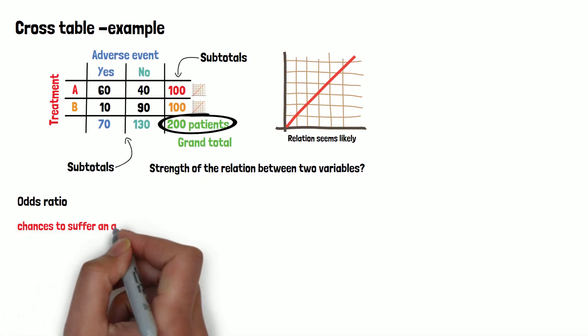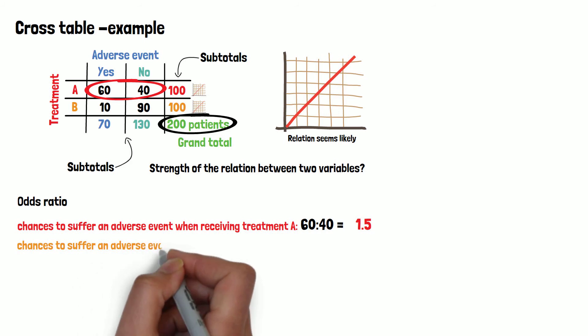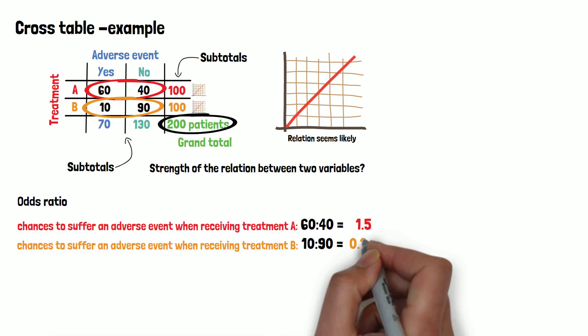The odds here are telling us how the chances are to suffer an adverse event when receiving treatment A. In this case, the chance is 60 to 40. 60 patients with an adverse event to 40 patients that didn't suffer one equals 1.5. We divide the number of patients suffering an adverse event by those not suffering an adverse event within the group of the patients that received treatment A. We can do the same for the patients of treatment B, ending up with 10 to 90 equals 0.1 repeating.